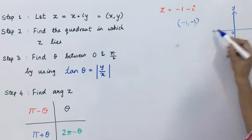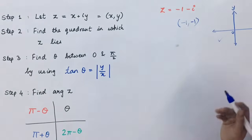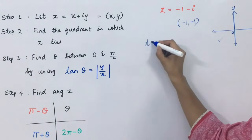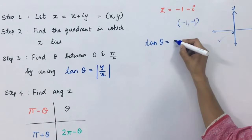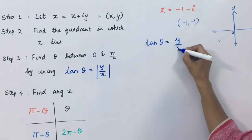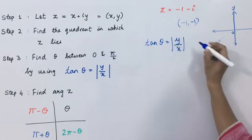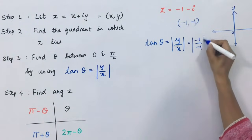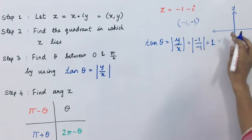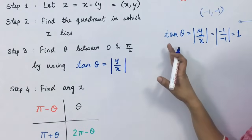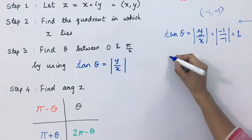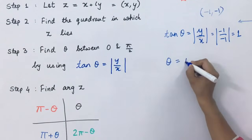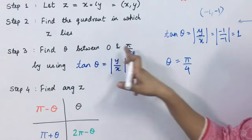So, this will be equal to minus 1. So, this will be equal to 1. Now, we know that tan 45 is equal to 1. So, theta's value is equal to pi upon 4. This is the value for theta which is between 0 and pi by 2.